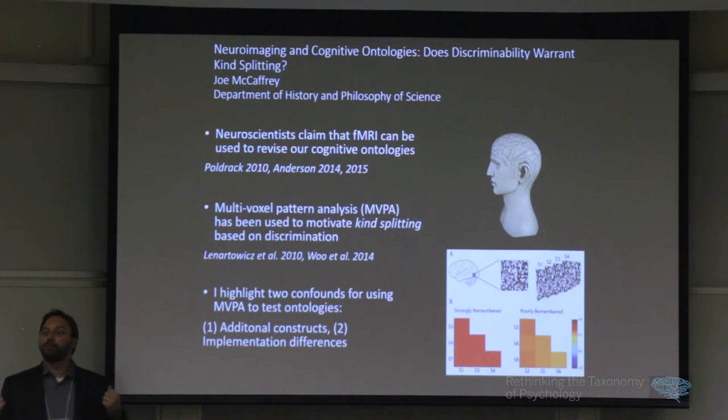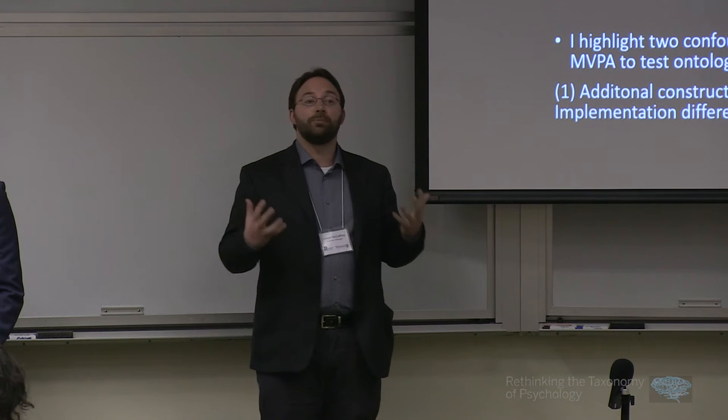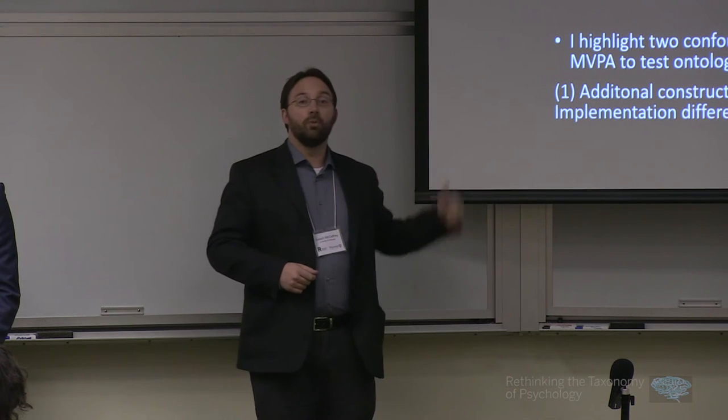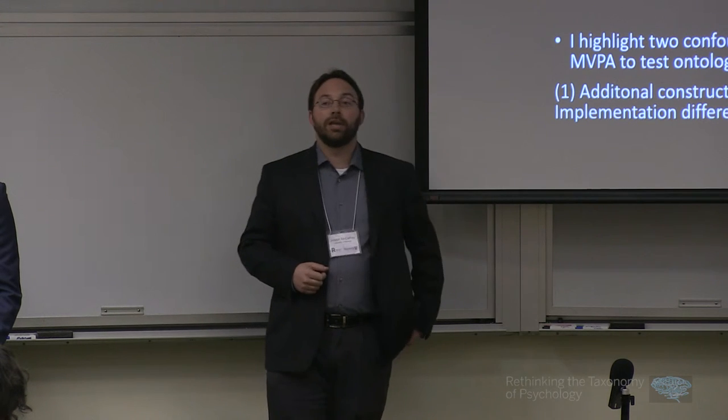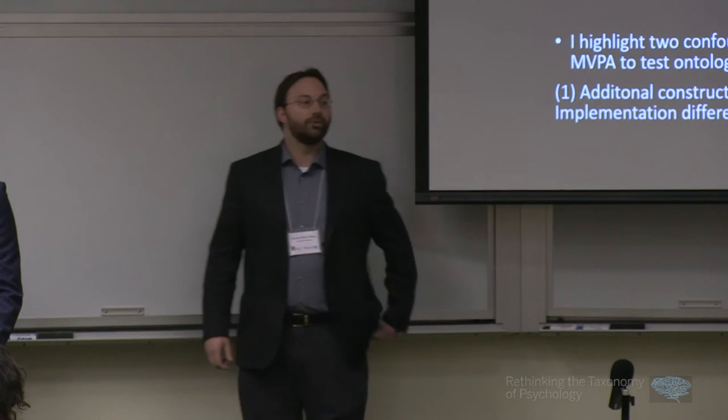MacDonald and Leary in a standard paper argue that pain and social rejection are actually the same kind of psychological process based on neural overlap. Then more recently, neuroscientists like Woo and Tor Wager have been able to discriminate those using MVPA and then argue that in fact, social rejection isn't a form of somatic pain. I'm going to raise two issues for whether or not MVPA can discriminate brain states. One is the presence of additional constructs that may be driving discrimination. Standard GLM analyses have controls like cognitive subtraction that often aren't used in MVPA designs. The second, which is a bit more conceptual, is what I call implementation differences—the idea that we can actually drive discrimination between someone seeing a basketball and seeing a baseball in cases where we have no reason to think there are really different kinds of cognitive processes taking place. I explore whether that's a reductio of the use of discrimination to drive cognitive ontology revision.